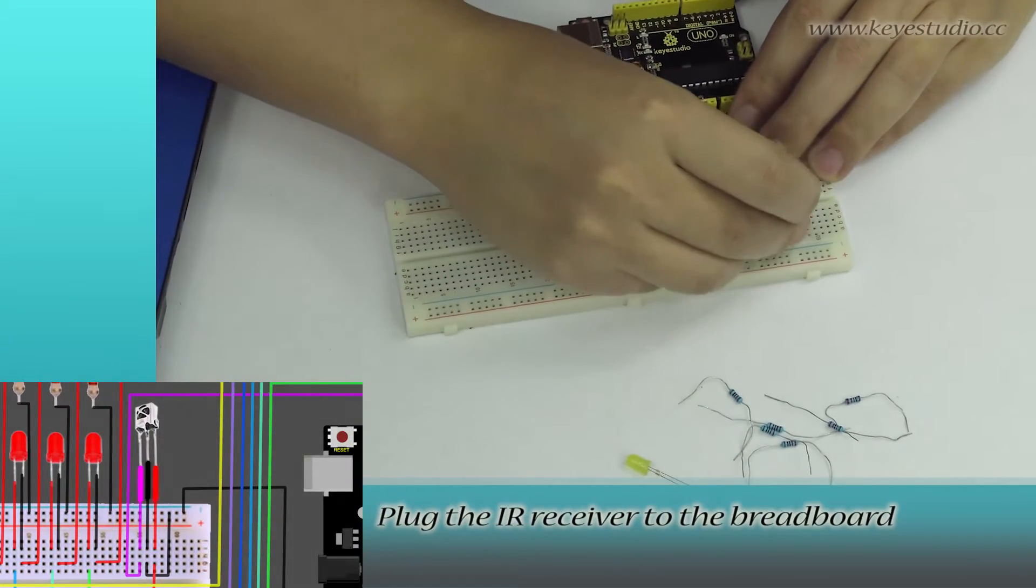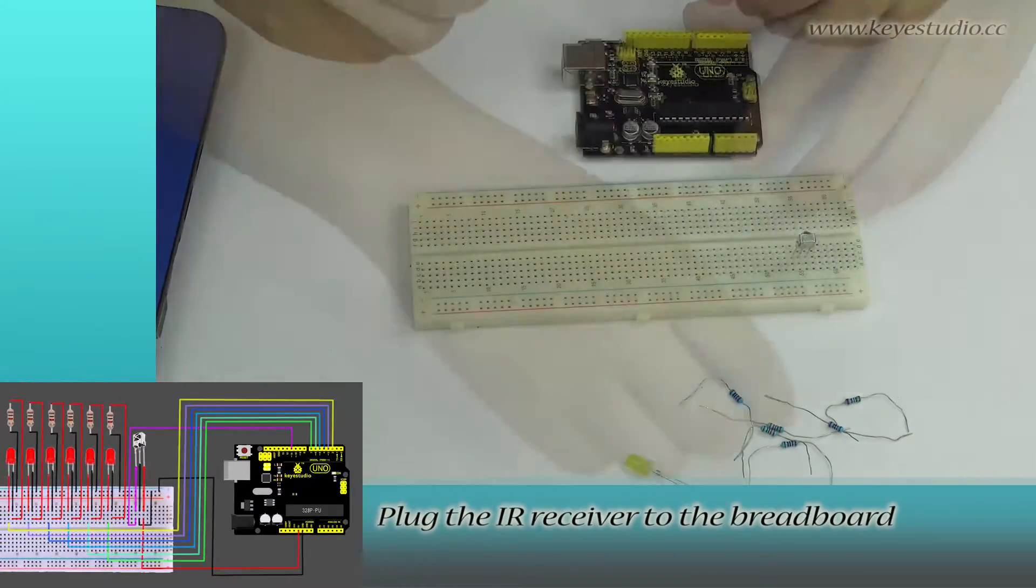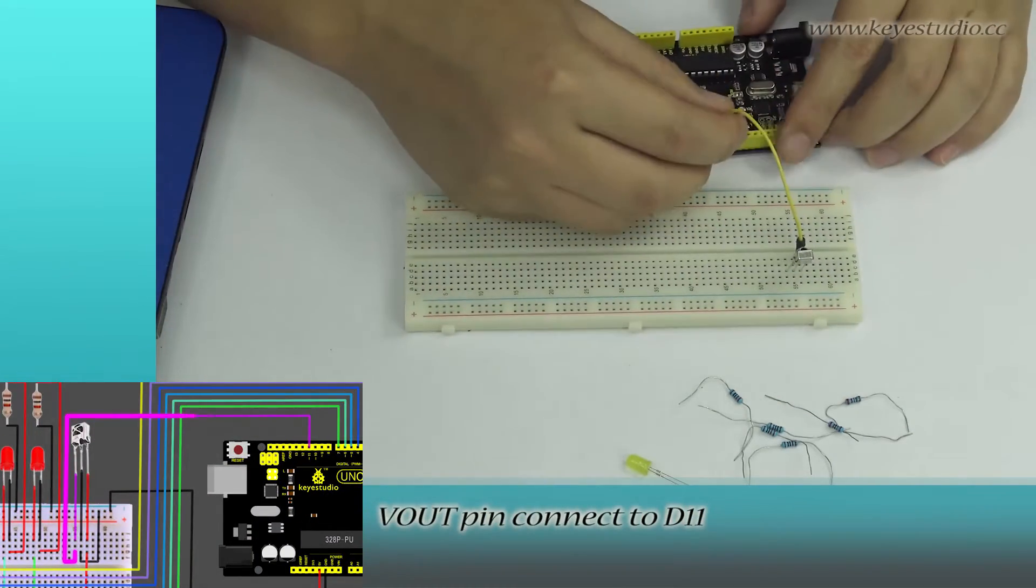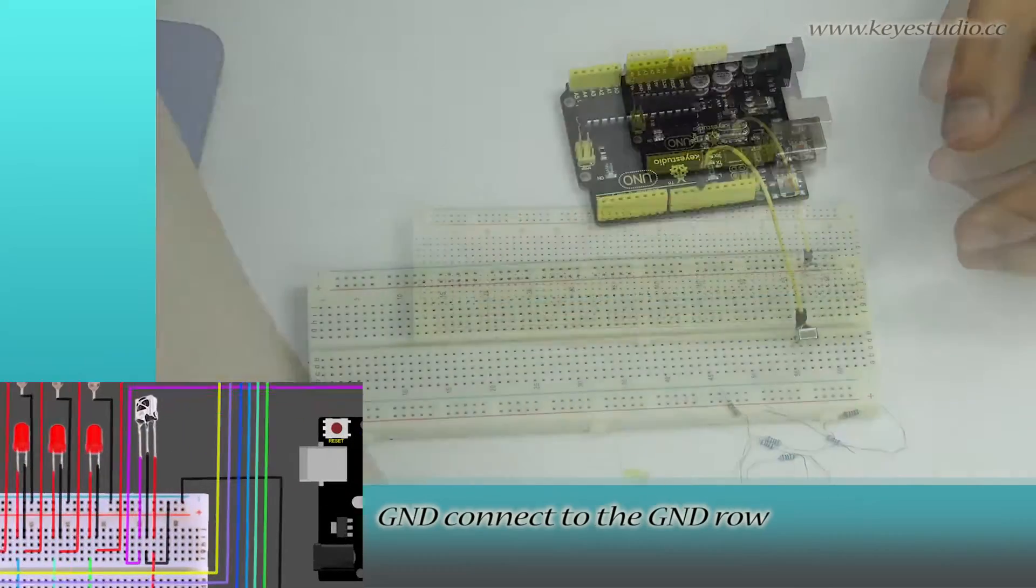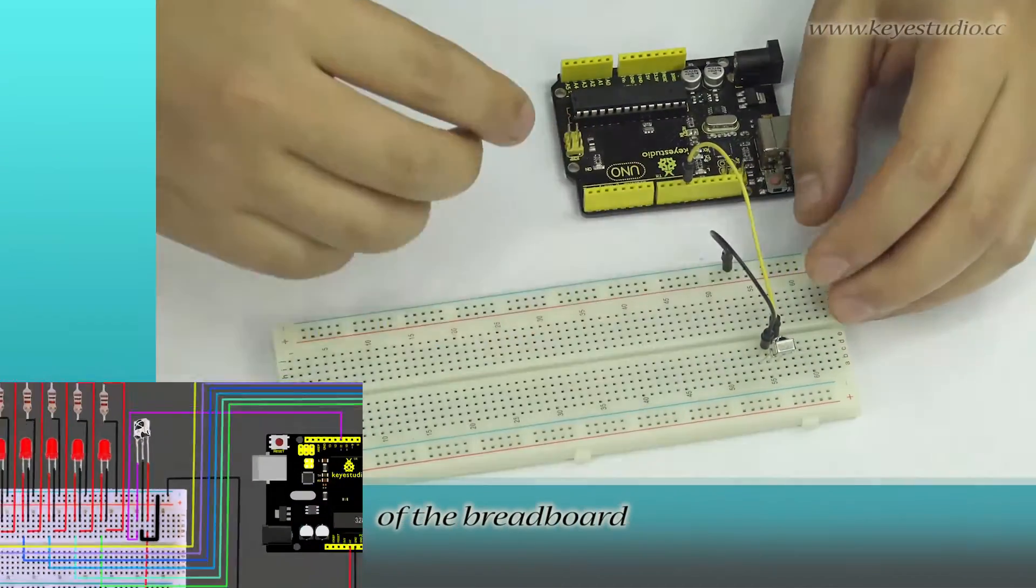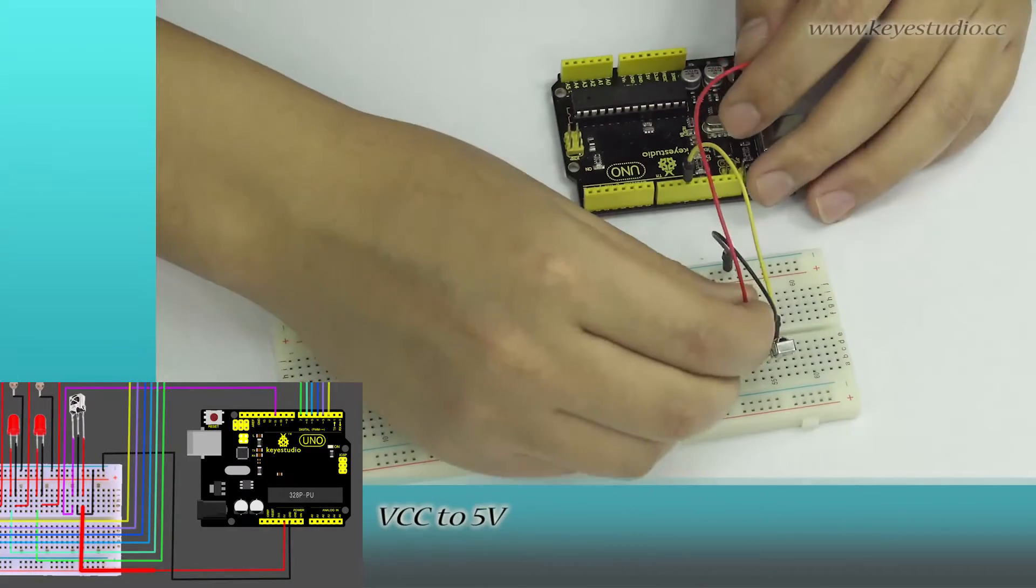Plug the IR receiver to the breadboard. V-out pin connect to C11. GND connect to the GND roll of the breadboard. VCC to 5V.